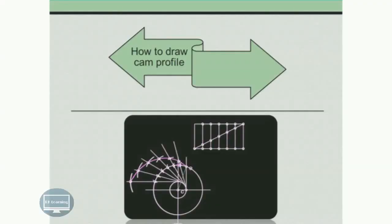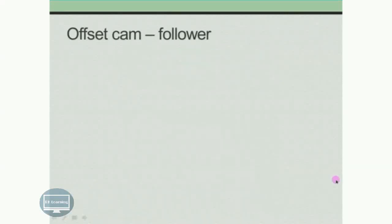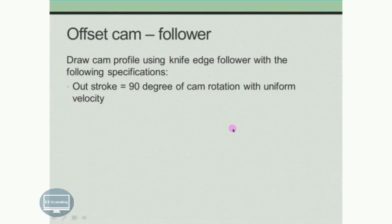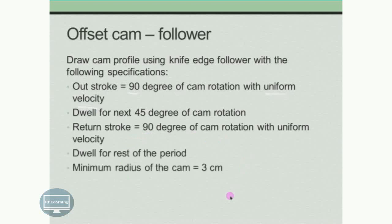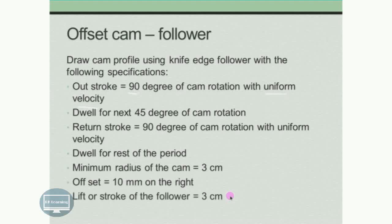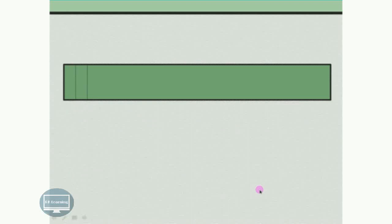This video explains how to draw a cam profile in case of the offset follower. The various specifications are: the out stroke is 90 degrees with uniform velocity, then dwell for the next 45 degrees of cam rotation, return stroke is also 90 degrees of cam rotation with uniform velocity, and dwell for the rest. The minimum radius of the cam is 3 cm, offset is provided on the right-hand side of 10 mm, and the lift or stroke of the collar is 3 cm.